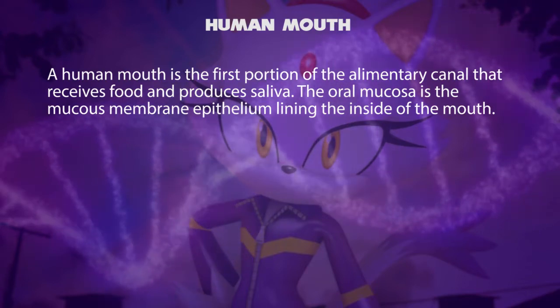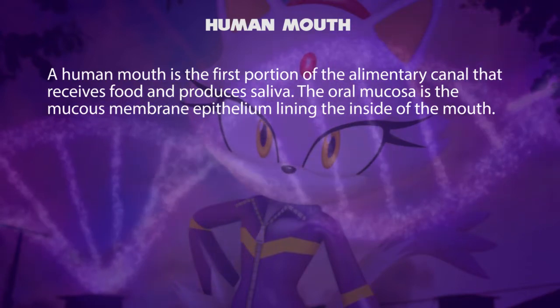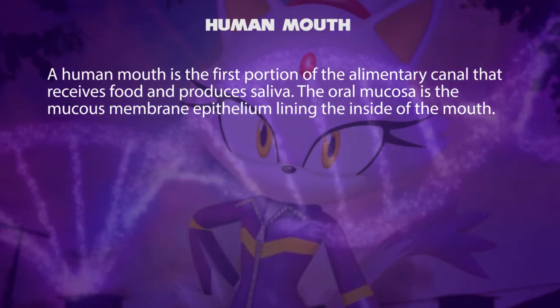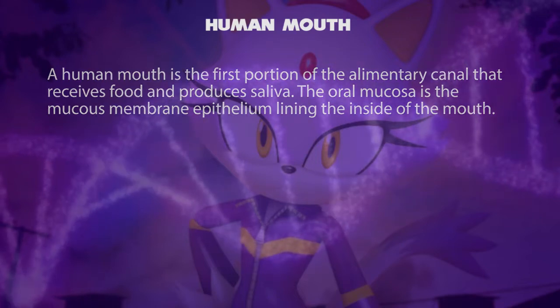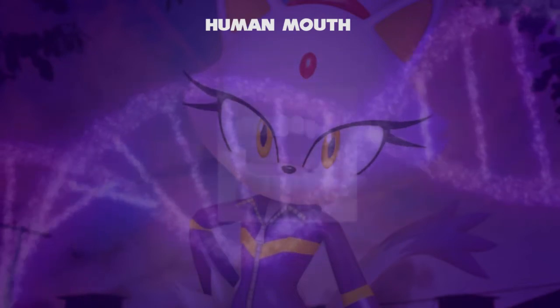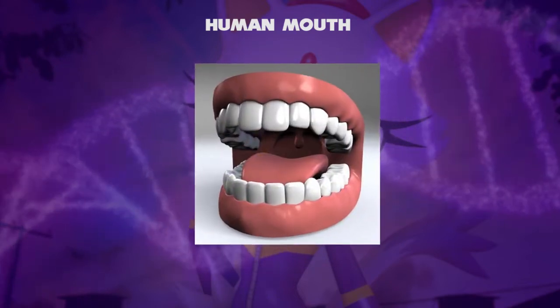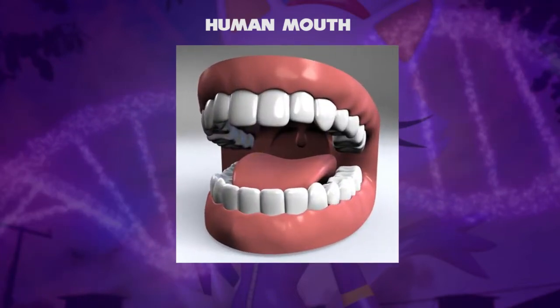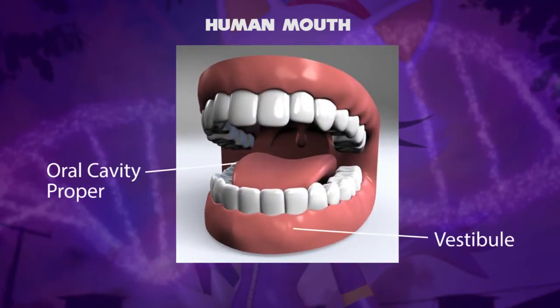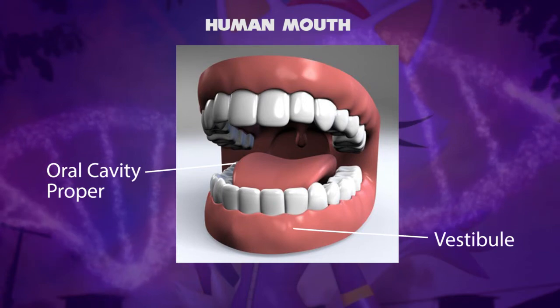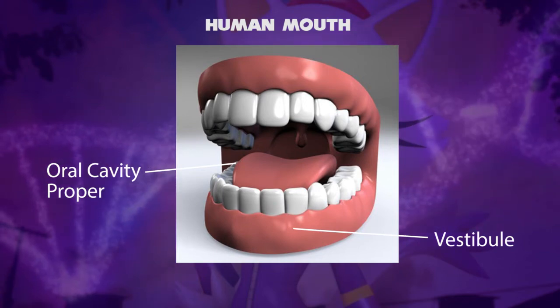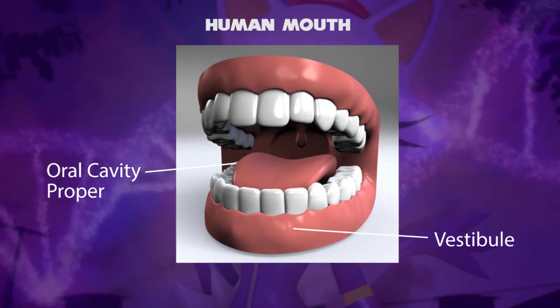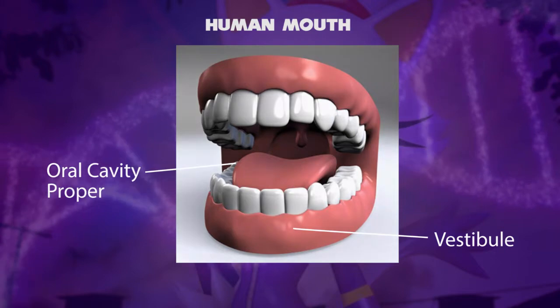The oral mucosa is the mucous membrane epithelium lining the inside of the mouth. The mouth consists of two regions: the vestibule and the oral cavity proper. The vestibule is the area between the teeth, lips, and cheeks.